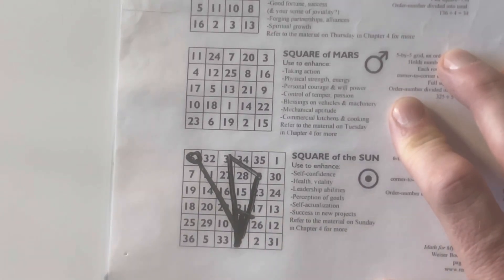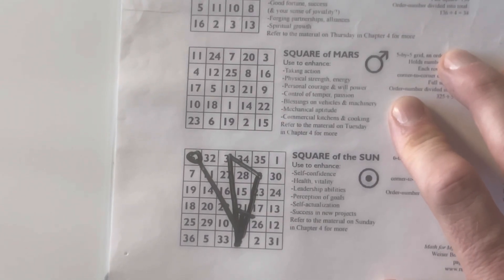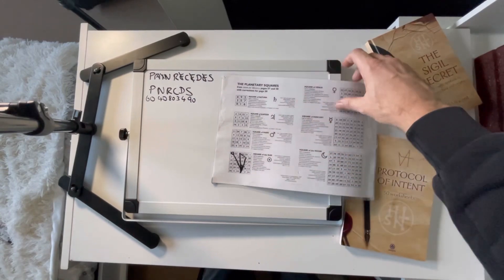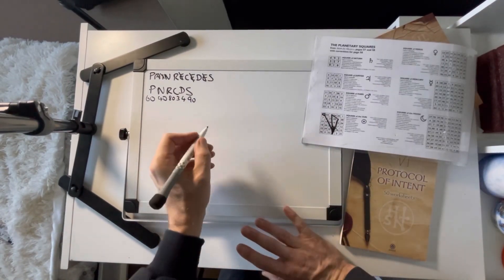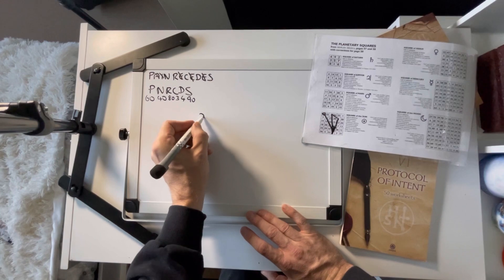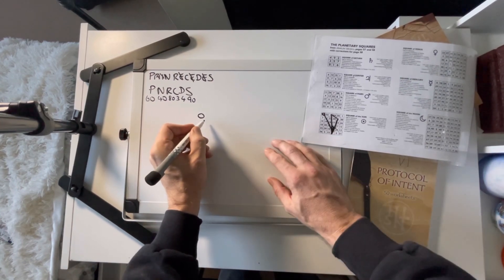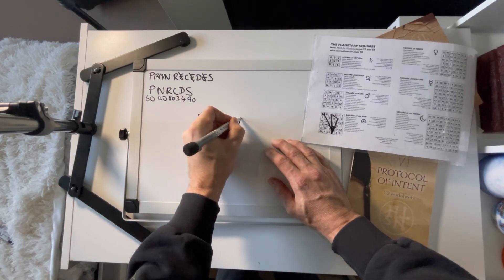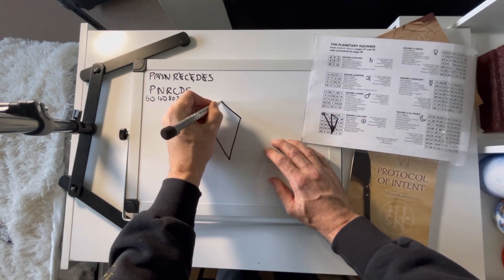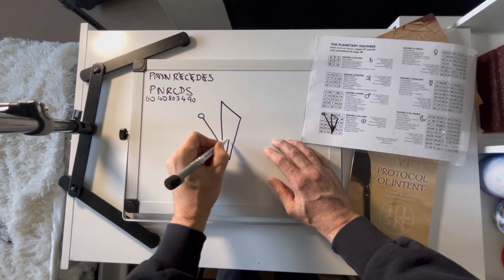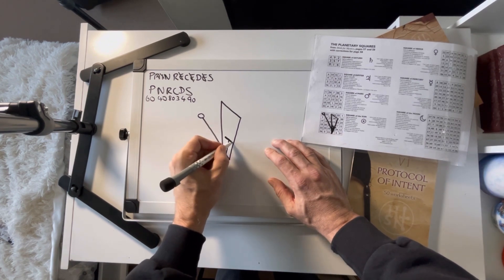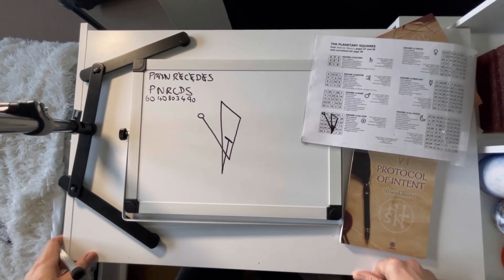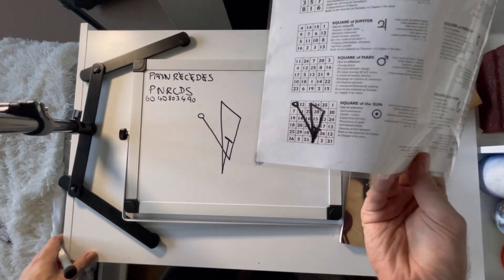That's quite difficult to see. So I'm going to come back out and transfer this onto here. And there you have a sigil for pain receding made using the square of the sun.